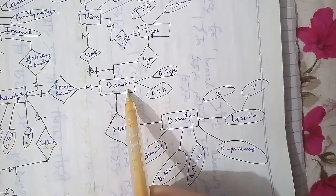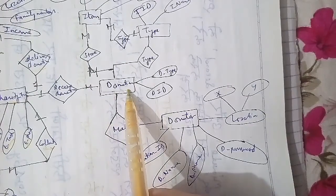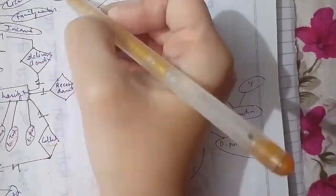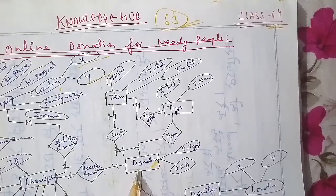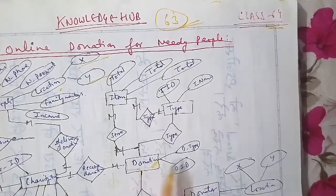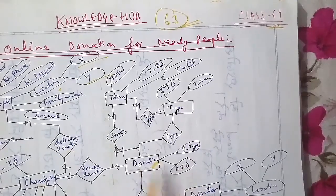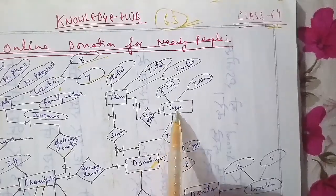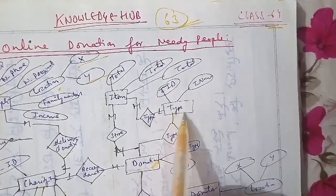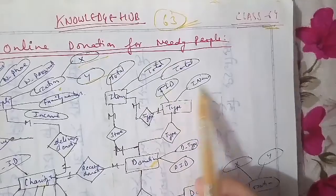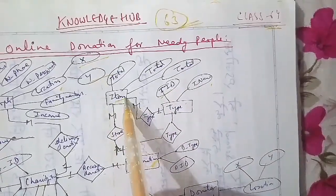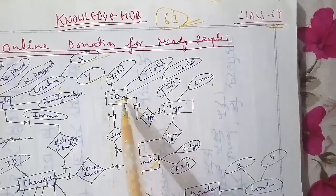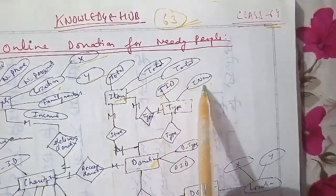The needy location is divided into X and Y coordinates as well. In terms of donation, we have the donation type and donation ID. The donation type is connected to the type entity, which has a type ID and type name. The type is connected to the items that have been donated, representing the total items. The store is also connected to the type and the donation.